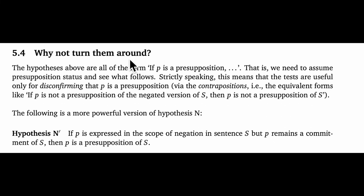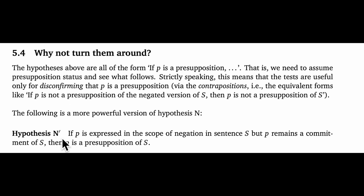One final topic: why not turn the tests around? All our tests have the conditional format that begins 'if P is a presupposition.' That's limiting — we need to assume presupposition status and see what follows, meaning the tests are strictly useful only for disconfirming that P is a presupposition. But we want to use them to make positive diagnoses. One tempting move would be to adopt Hypothesis N-prime: if proposition P is expressed in the scope of negation in sentence S, but P remains a commitment of S, then P is a presupposition of S. Hypotheses like these would allow us to make instant diagnoses of presuppositions.